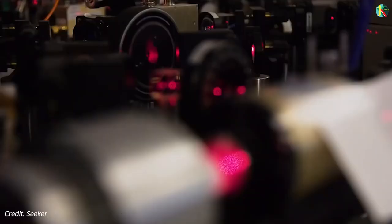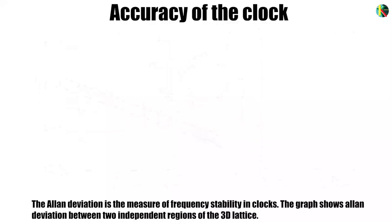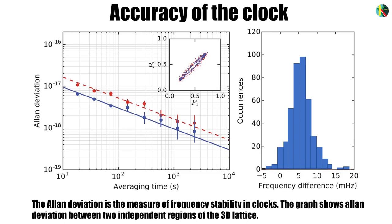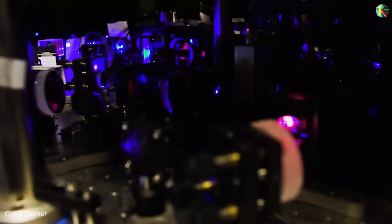The experimental data show the 3D quantum gas clock achieved a precision of just 3.5 parts error in 10 quintillion, that is 1 followed by 19 zeros, in about 2 hours making it the first atomic clock to ever reach that threshold.